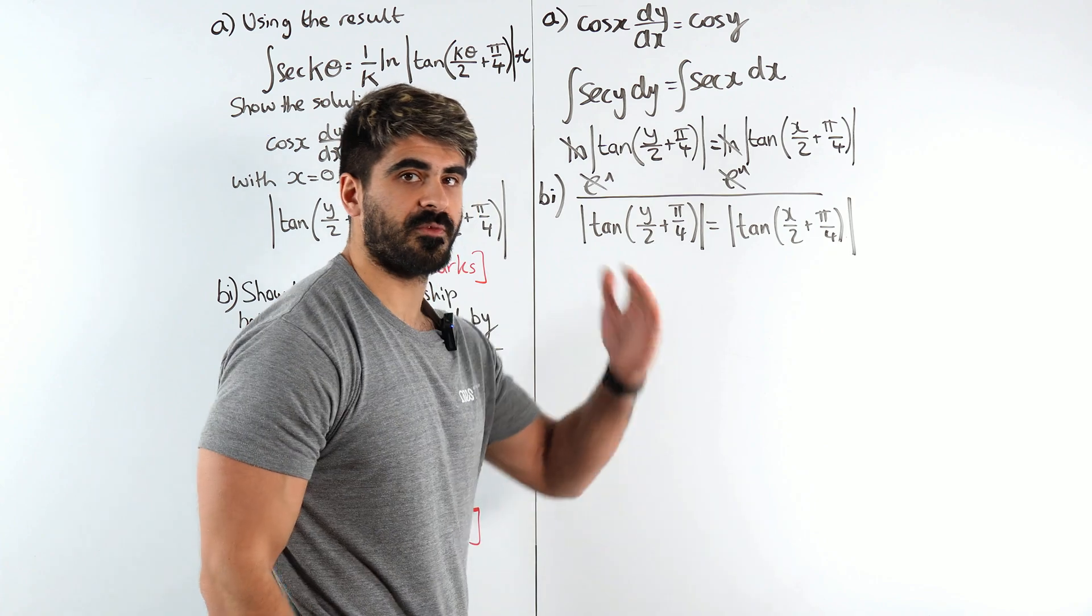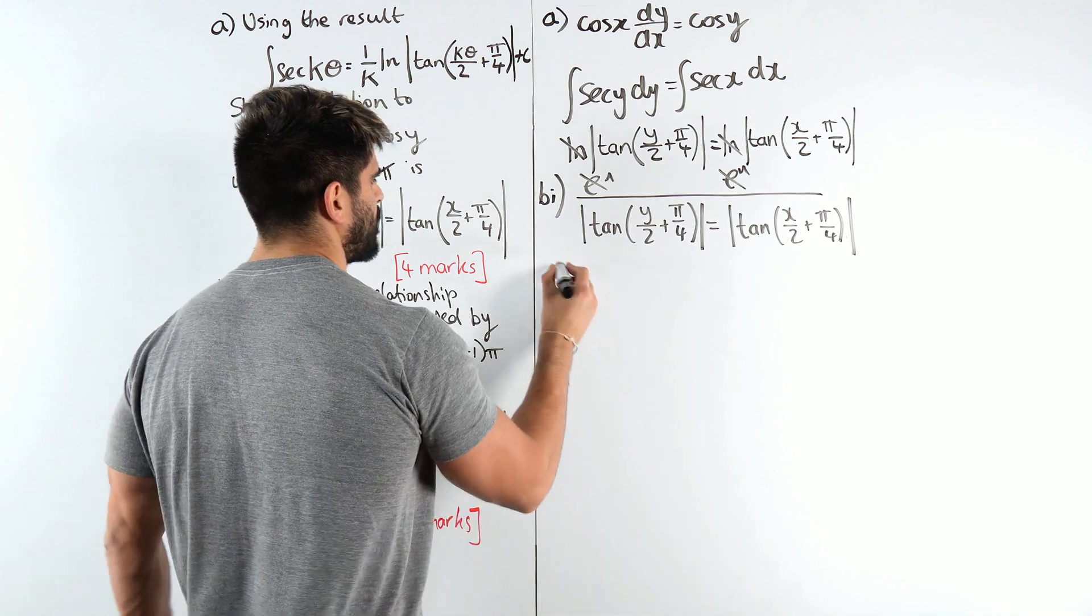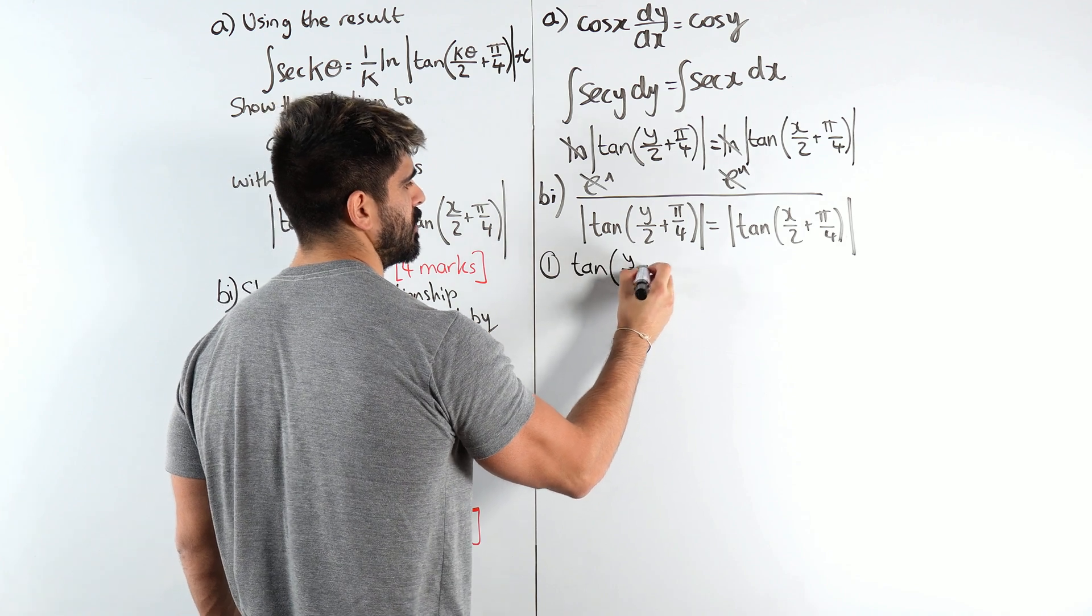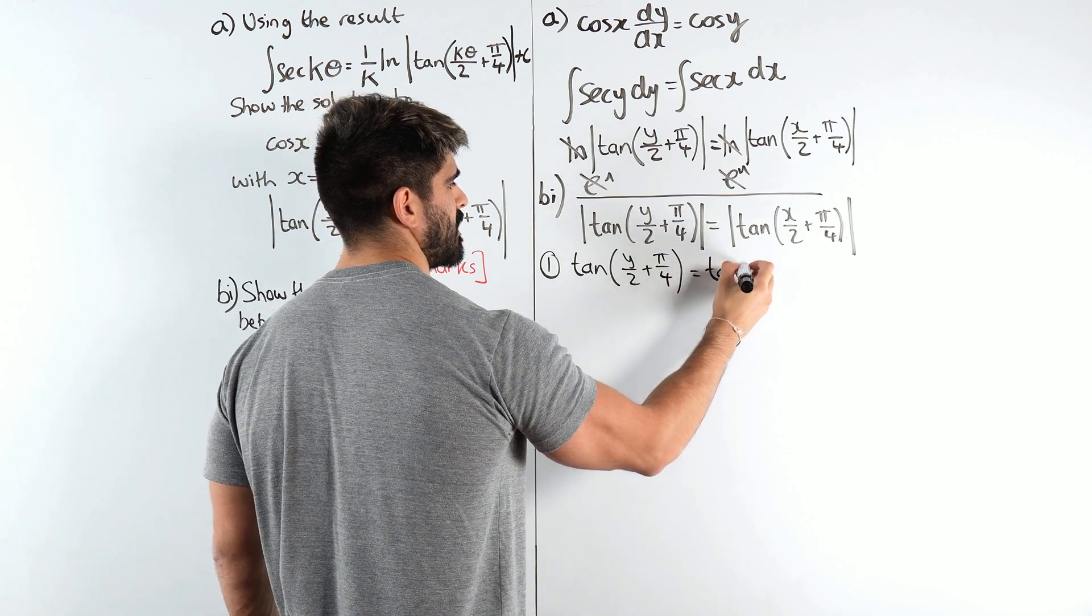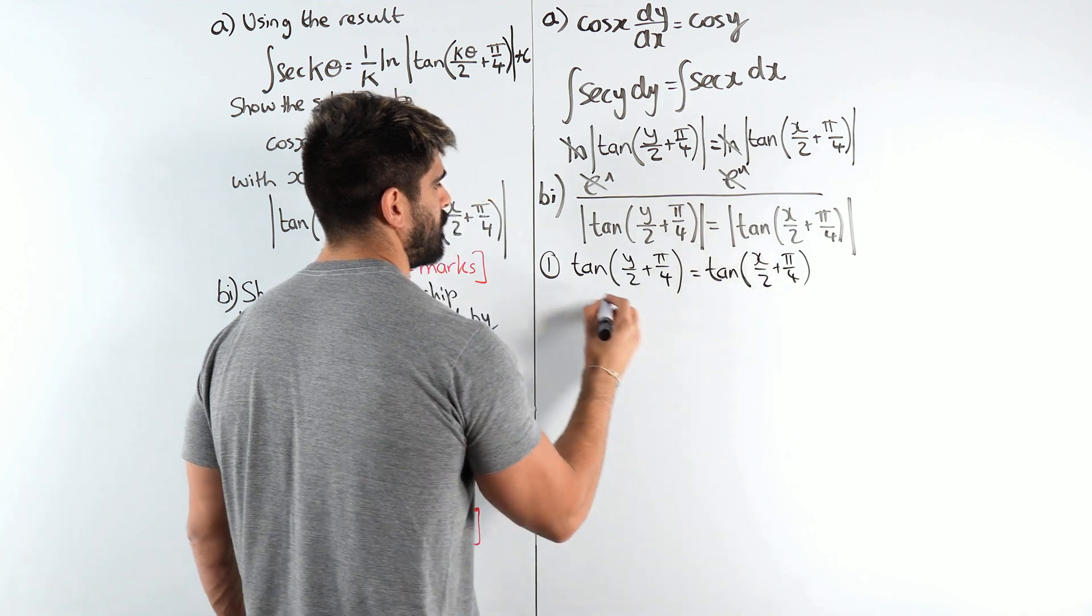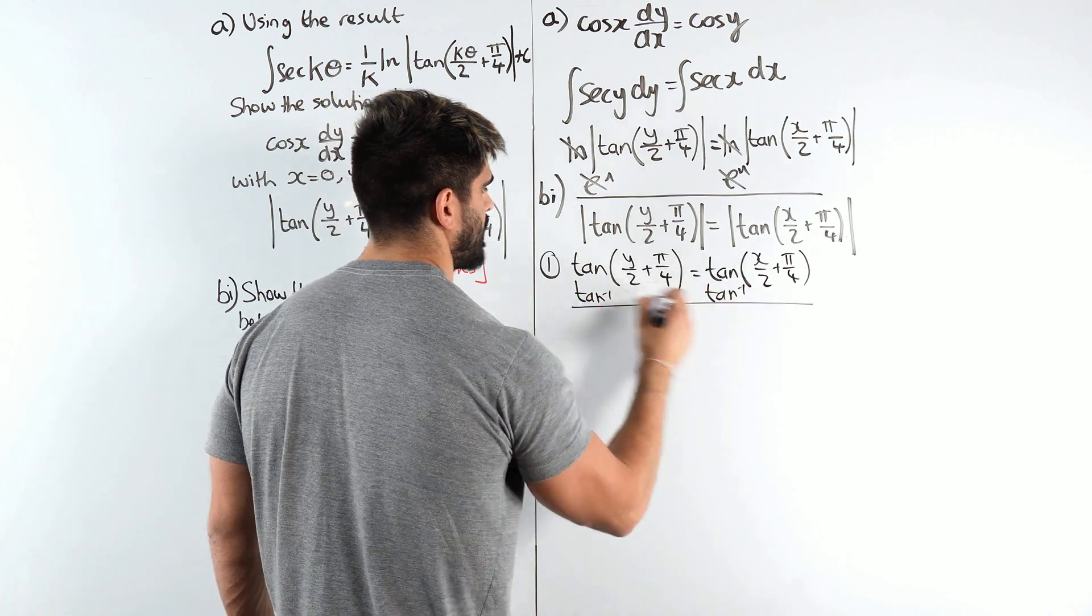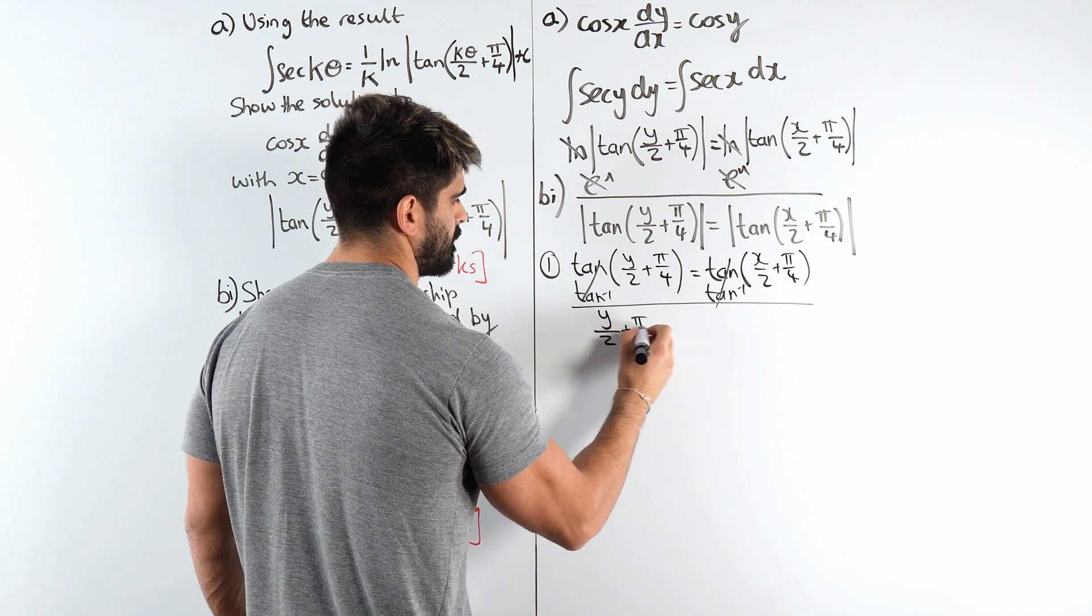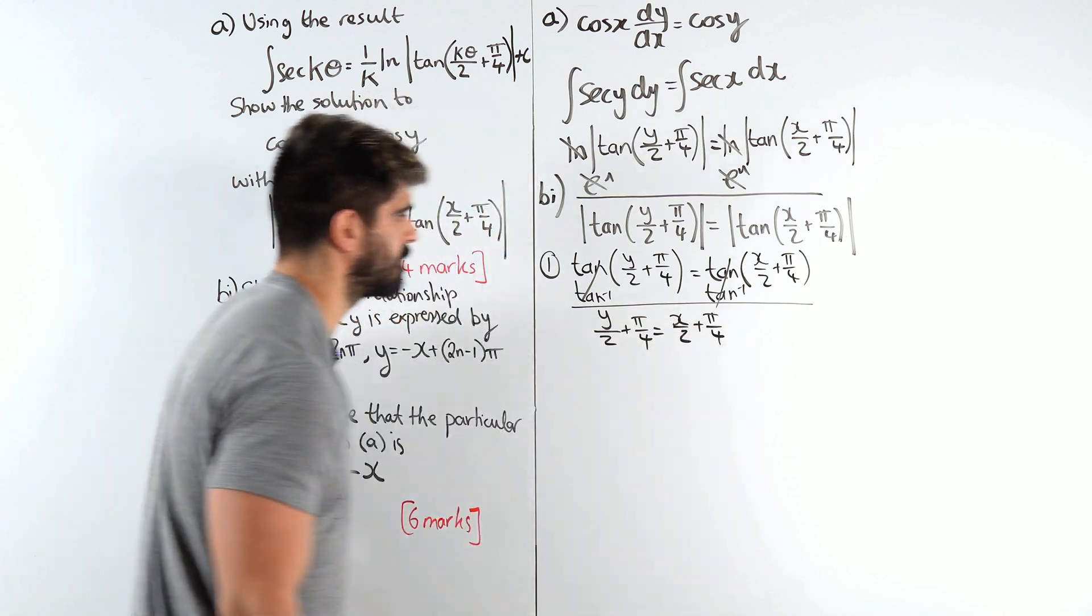Because you're not going to sketch that tan graph and show that it comes above the x-axis and reflect it and all that stuff. So the first solution is when tan of y over 2 plus pi over 4 equals the positive version of this. Then we're going to do inverse tan of both sides. And then this is where a lot of students get stuck. They're like okay what do I do next?